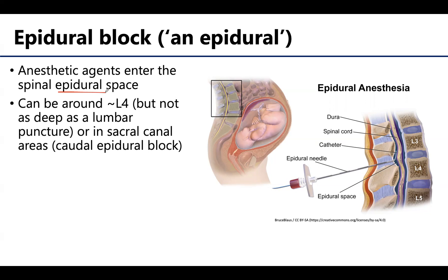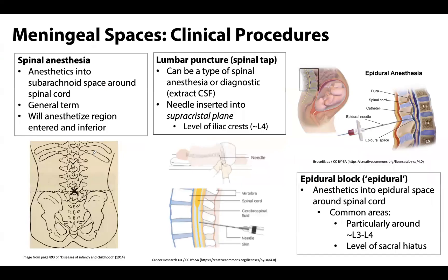Anesthetics can also be entered into the epidural space around the sacral canal. This is referred to as a caudal epidural block, and this would specifically bathe the S2 through S4 spinal nerve roots with anesthetics, which would include pain fibers from the uterine cervix and superior vagina, so it may be utilized for some pain relief during childbirth. These are the anatomical bases of some of the clinical procedures that involve the meninges or their associated spaces. Thank you so much for your time and attention with these concepts, and have a great rest of your day.